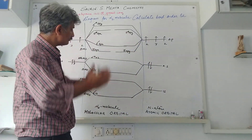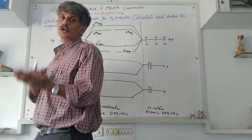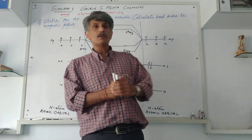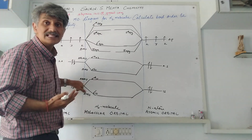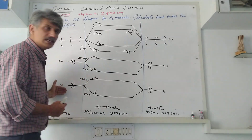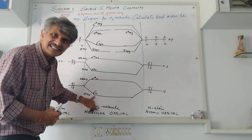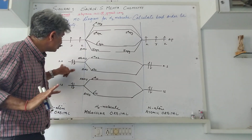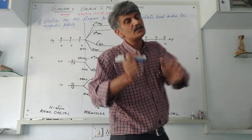As per theoretical values, every orbital has two energy levels: a lower energy orbital called the bonding molecular orbital (BMO) and a higher energy orbital called the anti-bonding molecular orbital (ABMO). For 1s and 2s orbitals, these are denoted as σ1s and σ*1s, and σ2s and σ*2s respectively, since s orbitals are spherical in nature.